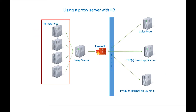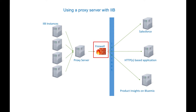IBM Integration Bus is typically deployed within a company's internal network close to systems of record. This means that in some situations, IIB may be positioned behind a firewall with restrictions on the direct network connectivity when sending data to SaaS applications or Internet services. Many companies will deploy an HTTP forward proxy server which sits between applications such as IIB and the outbound Internet connection.